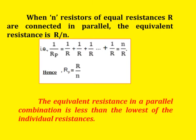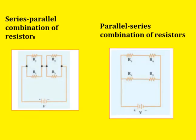Next, series-parallel and parallel-series combinations of resistors. In a series-parallel combination, a set of parallel resistors is connected in series — the final formula is R_total = RP1 + RP2. In a parallel-series combination, a set of series resistors is connected in parallel — the final formula is 1 / R_total = 1 / RS1 + 1 / RS2.